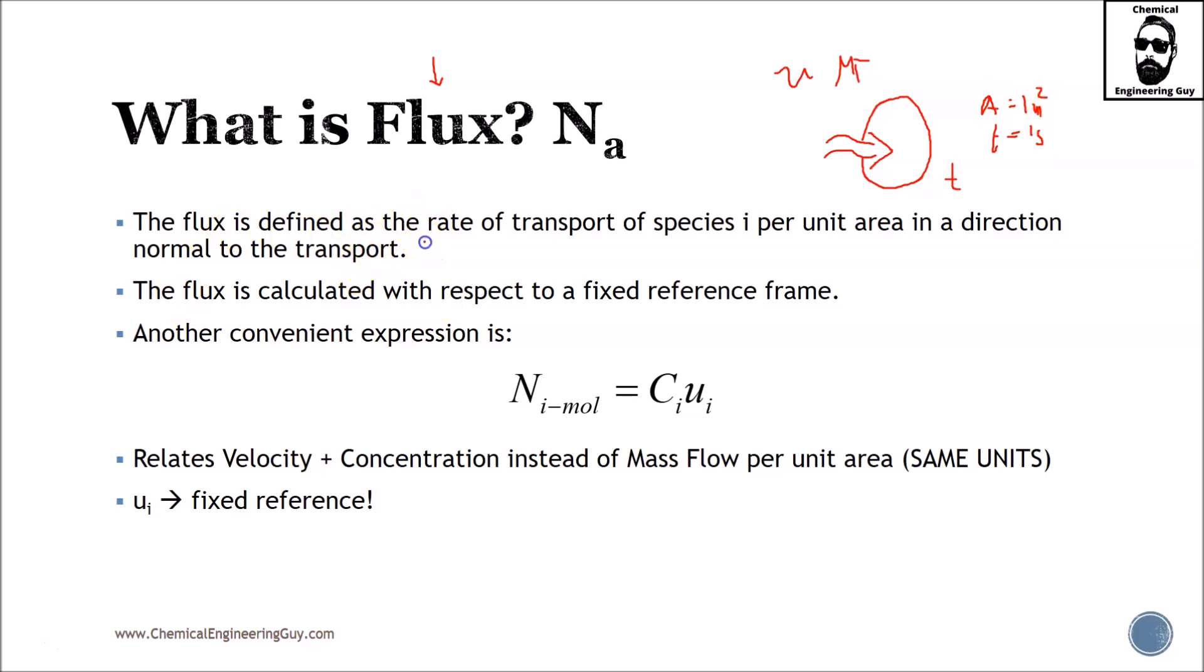Flux is defined as the rate of transport of species i per unit area in the direction normal to transport. That's very important—always normal to transport. If we're moving in a pipe from left to right, then the flux we care about is the one that goes from left to right.